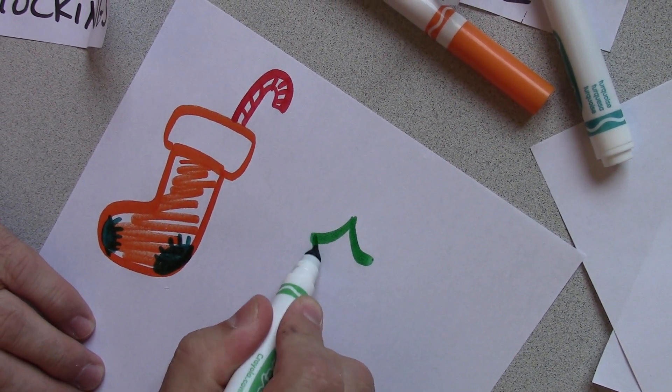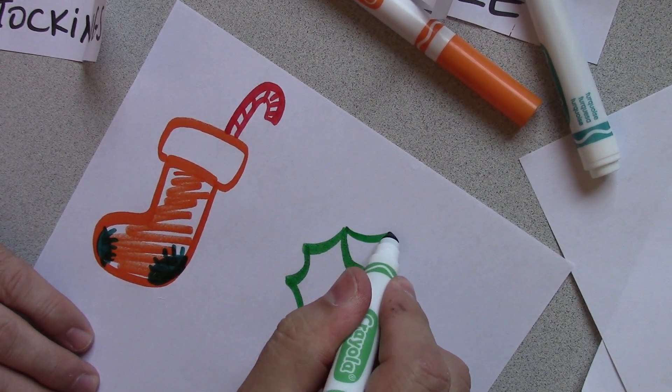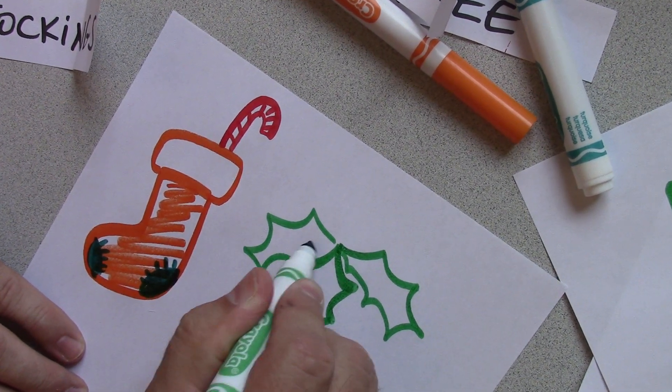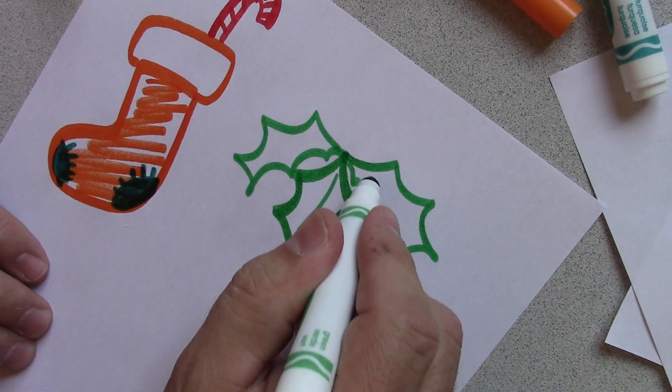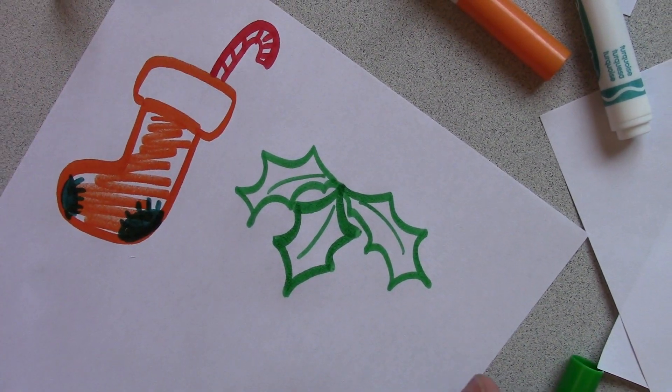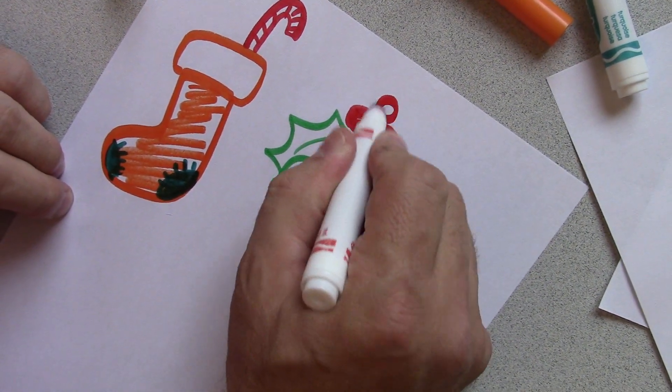Then once you learn how to do this, you will make borders on every holiday thing you want to do. And go back and put a couple of the berries on. And there you have it.